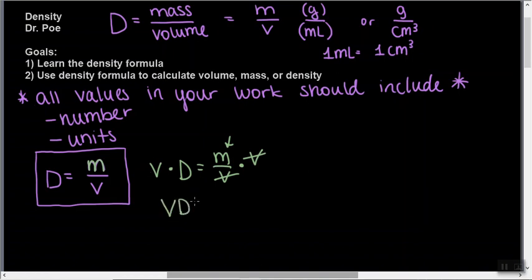So we've got V times D equals M, and we can just switch those two places. Mass equals volume times density. Okay, so that's the second equation that we can get. And you could memorize this, or you can just remember D equals M over V and solve for it later.